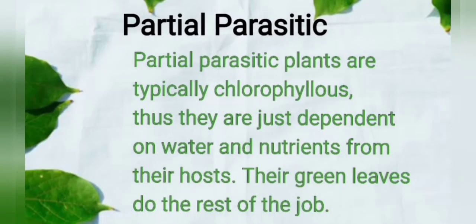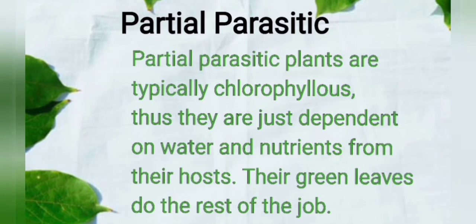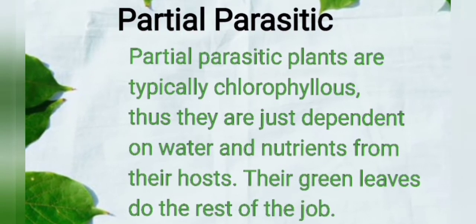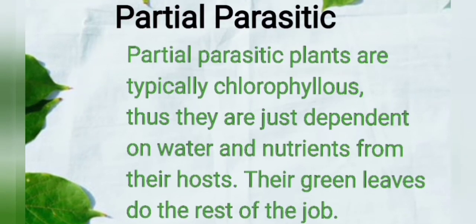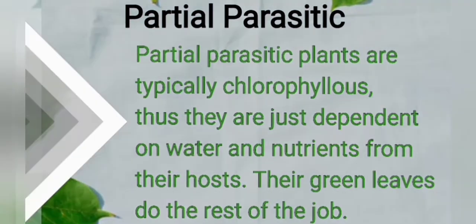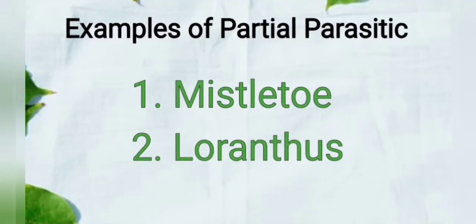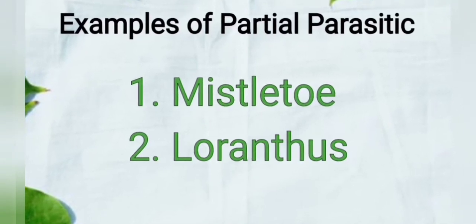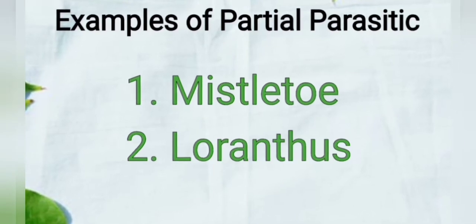The second type of parasitic plant is the partial parasitic plant. The partial parasitic plant is dependent on water and nutrition from their host plants, but their green leaves help them do the rest of their job. Examples of partial parasitic plants are Mistletoe and Loranthus, which prepare some of their own food but also depend on the host for nutrition.